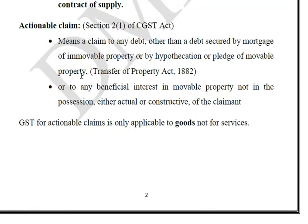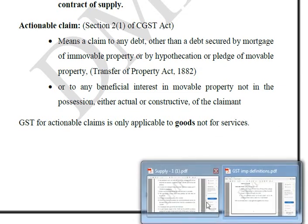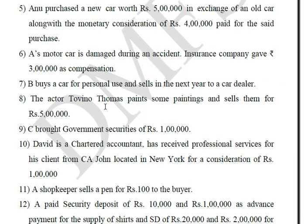Note that GST for actionable claims is only applicable to goods — specifically lottery and betting — not for services. If you have an insurance claim, it is an actionable claim, but it is not lottery or betting. Therefore it cannot be a supply. So insurance compensation of Rs.30,000 is not a supply.